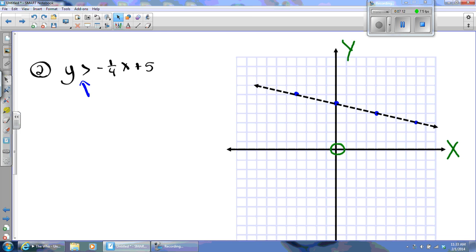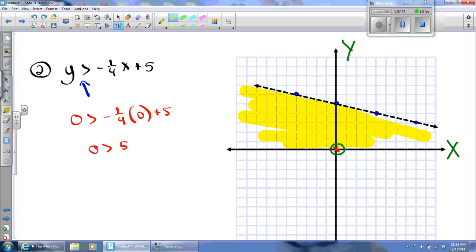So now I have to pick my test point. And I like to pick the origin. There's only one situation where I can't pick the origin. Again, see if you can tell me what that is. Negative one-fourth times zero plus five. And I get zero is greater than five. Is zero greater than five? It sure is. So therefore, I shade beneath.